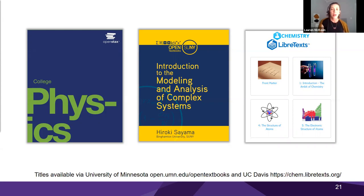Open access differs from OER in that open access means making work available to people, but they wouldn't necessarily be able to alter it — they can simply access it openly. Three examples of OER funding: OpenStax was funded in part by the Gates and Hewlett foundations and is now self-sustaining, with well-branded books. Open SUNY is an example of institutionally funded OER with a grant program and library support. LibreTexts — shown here as a chemistry textbook — was funded through a $5 million government grant to UC Davis.